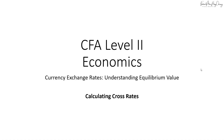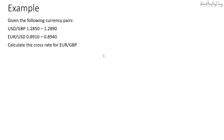Now let's look at an example on how we calculate cross rates. Let's say we have the following currency pairs: dollar to pound, which is 1.285 to 1.289 — this is the bid and ask rate — and then we have euro to dollar at 0.891 to 0.894.